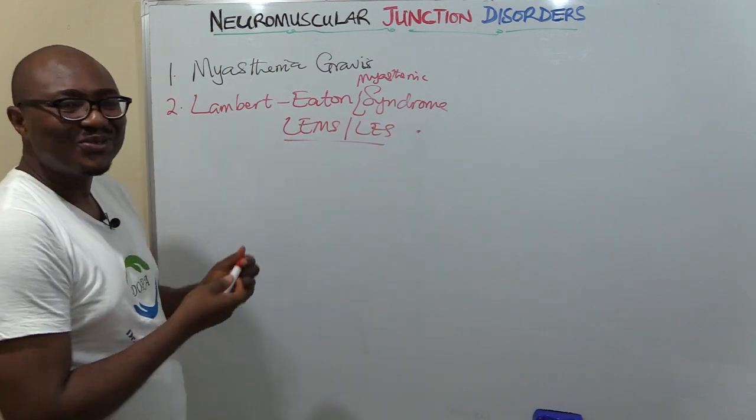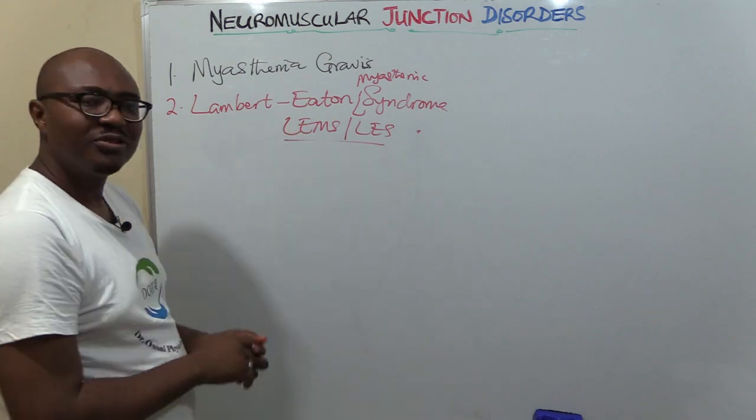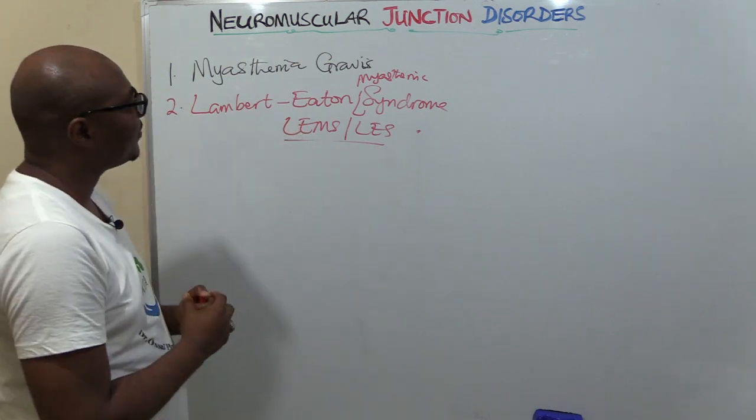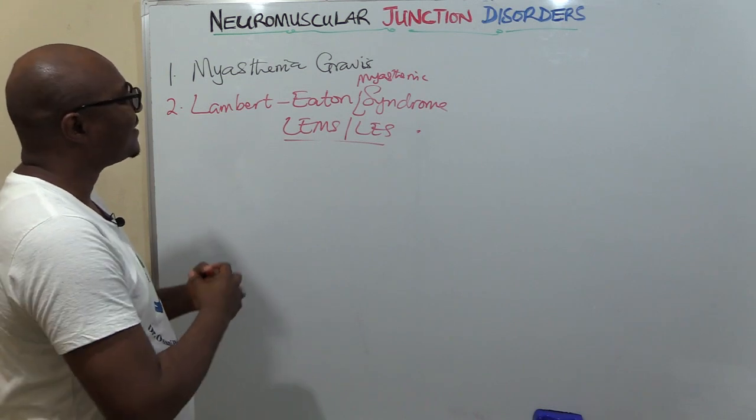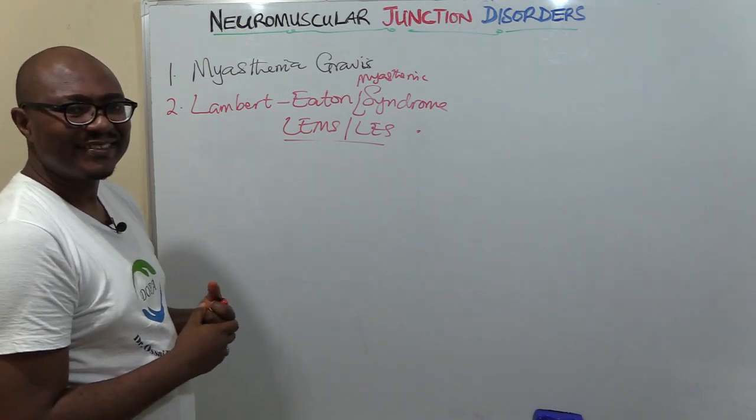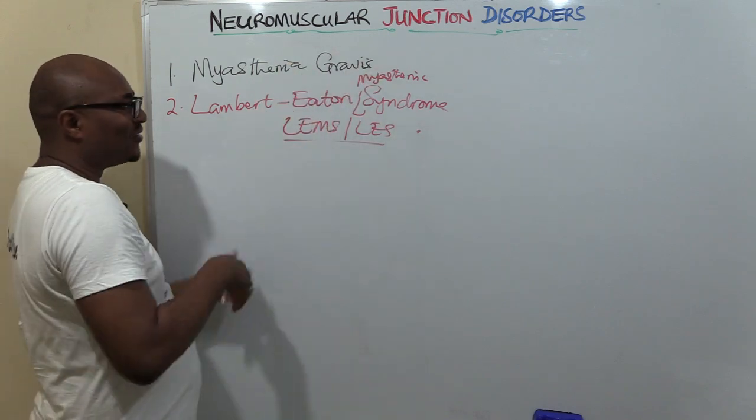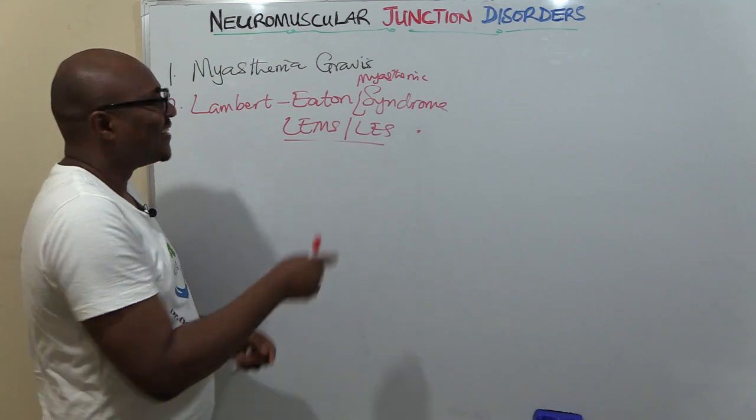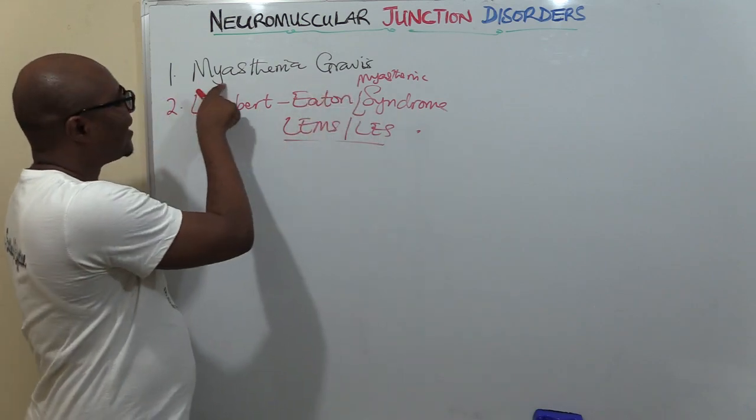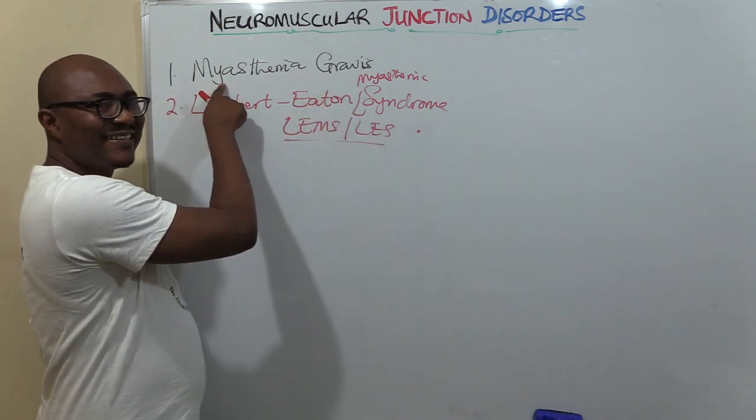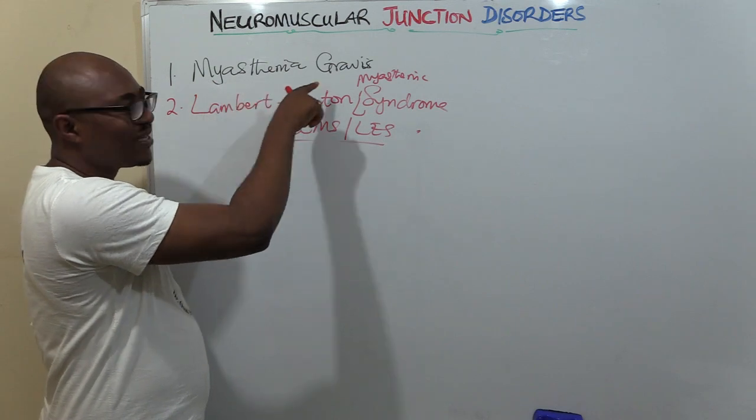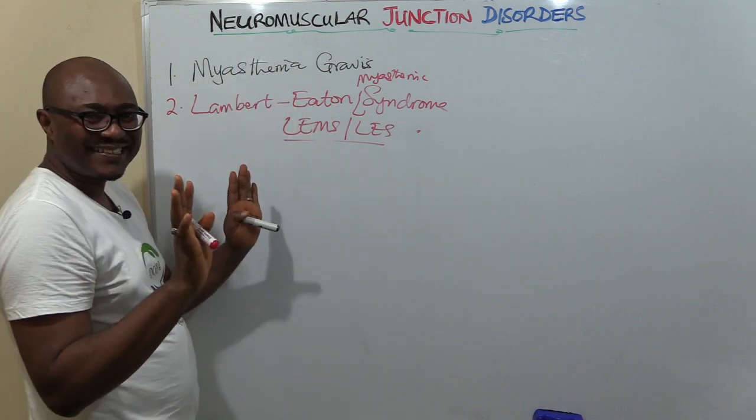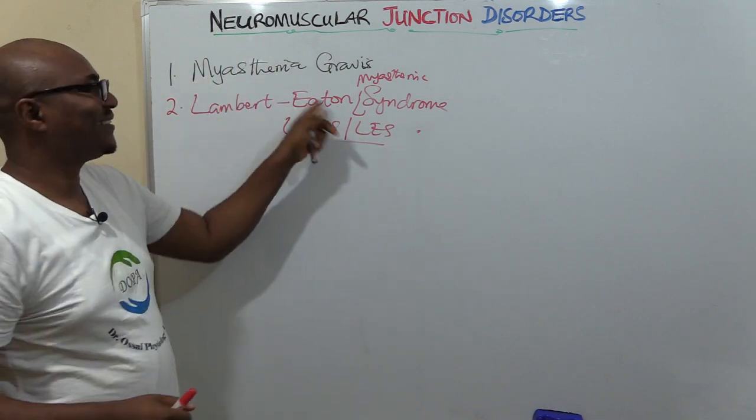Oftentimes they add myasthenia—Lambert-Eaton myasthenic syndrome, or LEMS. So these are the two major neuromuscular disorders that are more common than the rest. Myasthenia Gravis is a Latin word—gravis means something grave, something serious—it's a grave muscle weakness.